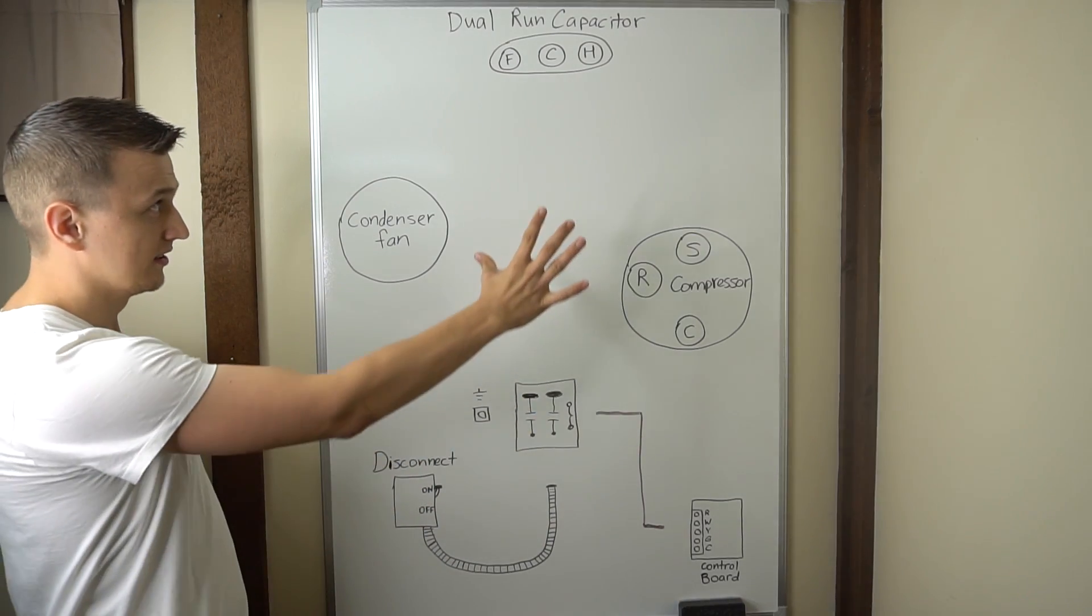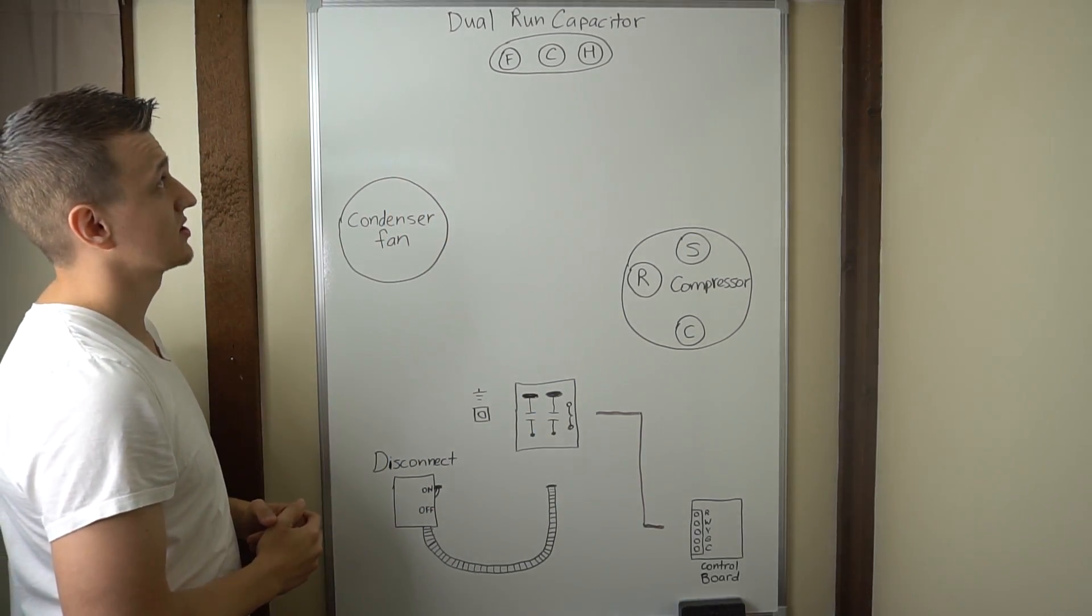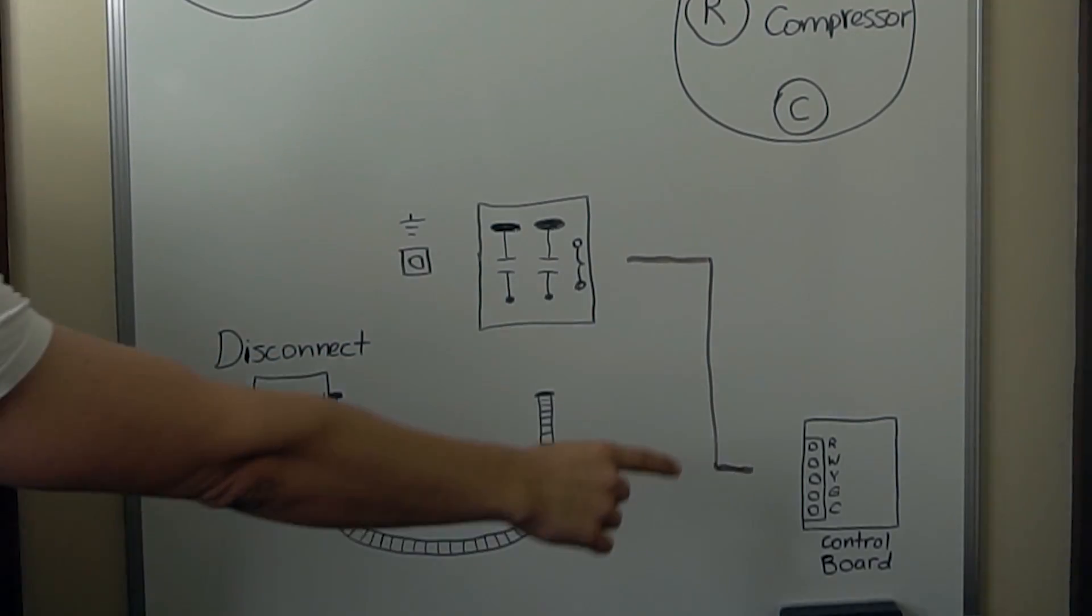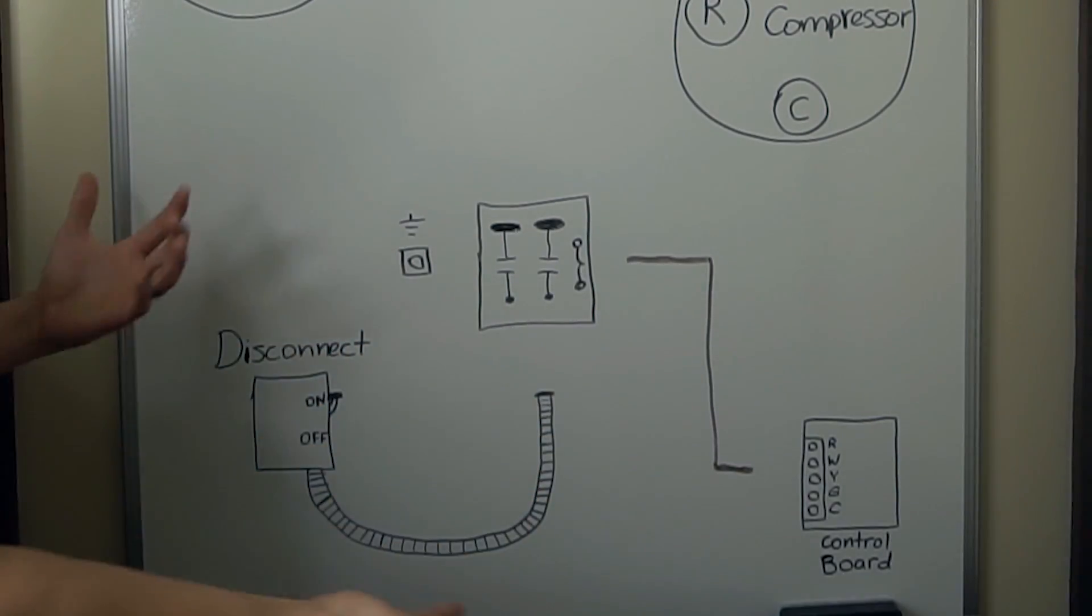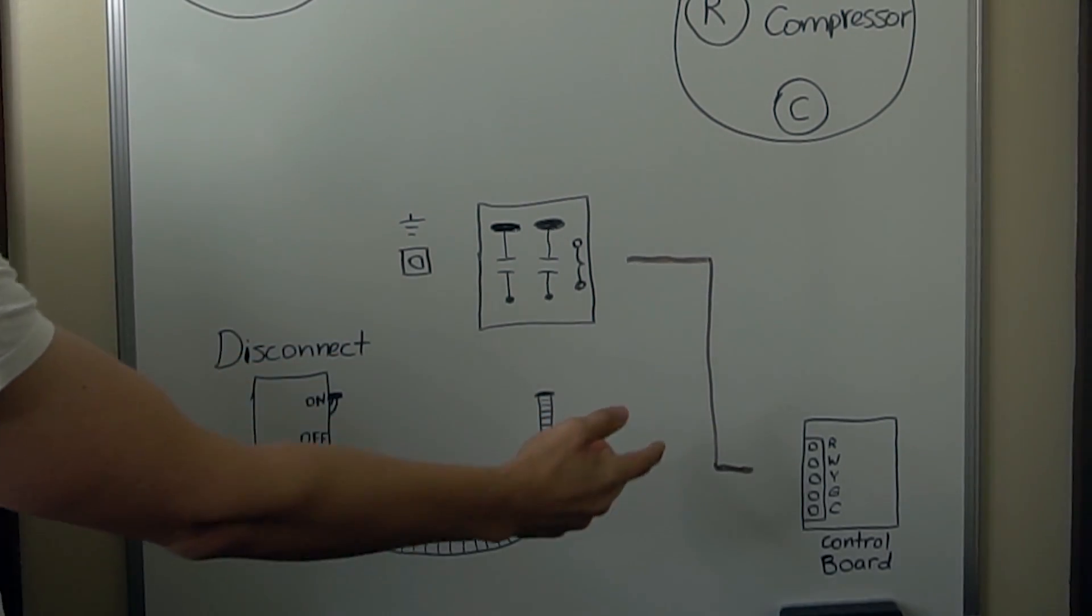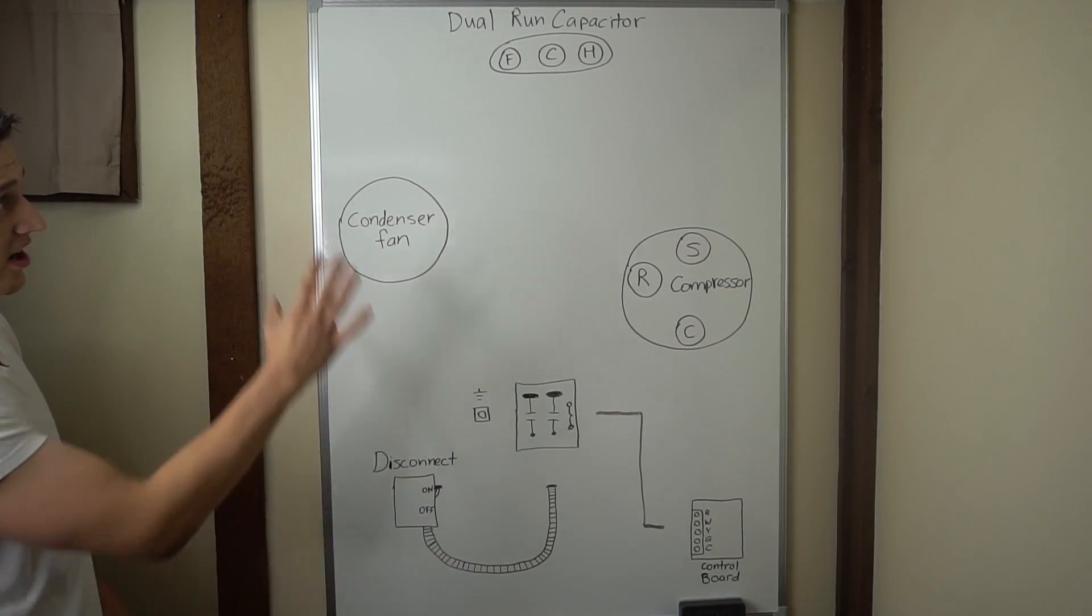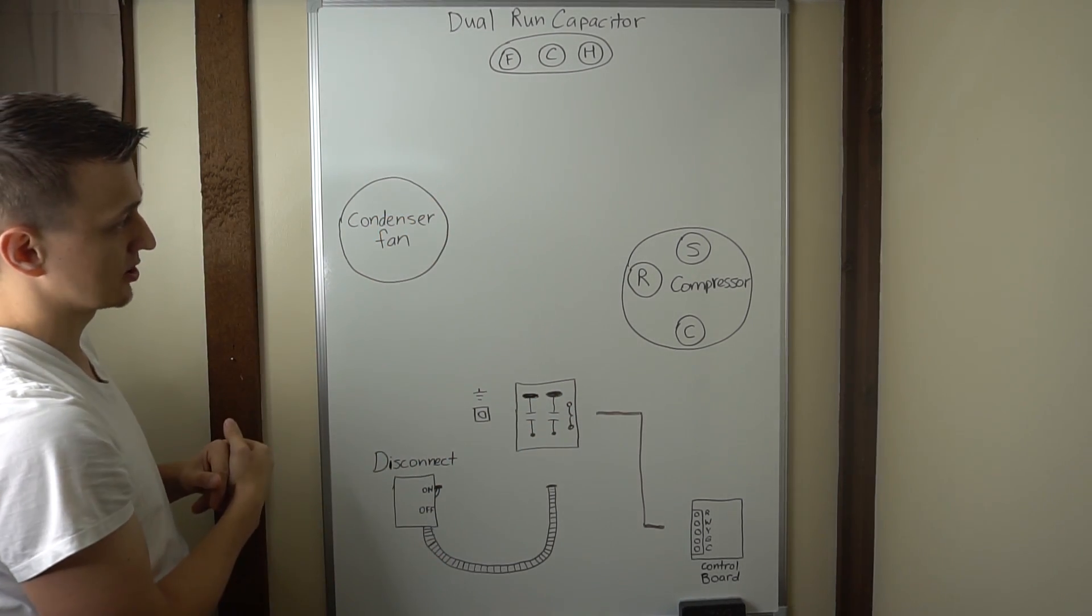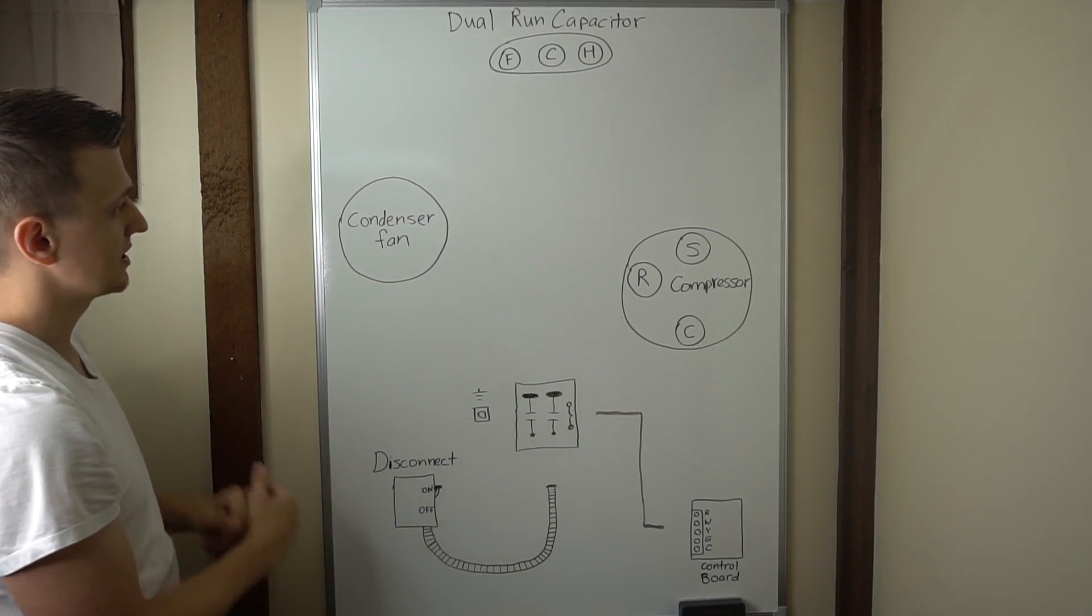So here we got all our condenser unit components. We got the dual run capacitor, the condenser fan motor, the compressor, contactor, the disconnect. And if you have a furnace along with your air conditioner, you'll have a control board where you're getting the 24 volts from. And as you can see, I only drew the components and there's no wires or no wiring diagrams at all.